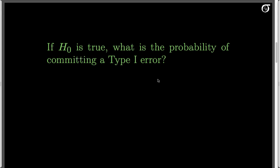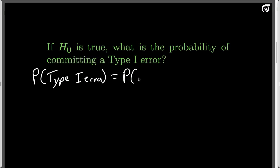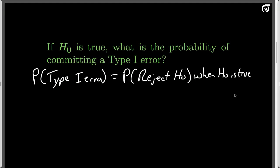If the null hypothesis is true, what is the probability of committing a type 1 error? A type 1 error is rejecting the null hypothesis when it is true — the probability we reject H-naught when H-naught is actually true. We've decided to reject the null hypothesis when x-bar is bigger than or equal to 406, or equivalently when z is bigger than or equal to 2.4. We could go straight to the standard normal table and find the area to the right of 2.4.